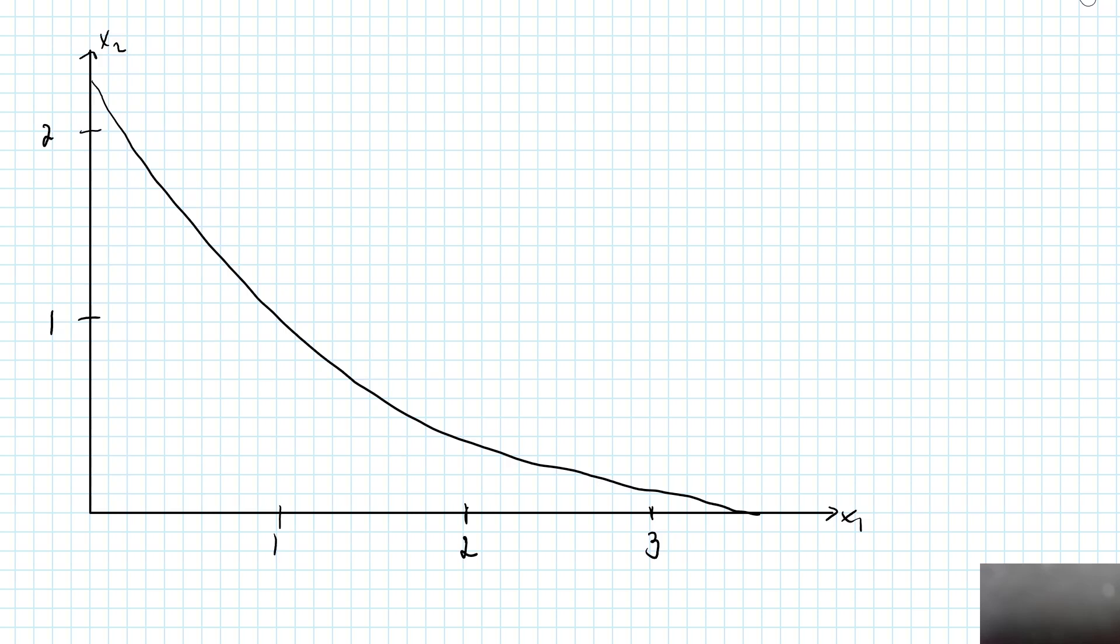So far we have assumed that goods are infinitely divisible, and with well-behaved preferences I could have a nice-looking indifference curve like this. Here is a bundle on the indifference curve where I consume 1.4 units of good 1 and 0.7 units of good 2.